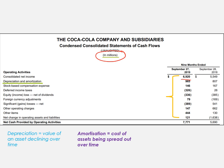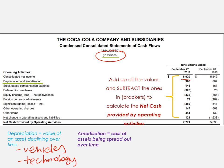In the Coca-Cola statement, they list all the operating activities, add up all the values, and subtract anything in brackets because that represents a cash outflow. They then arrive at the net cash provided by operating activities.